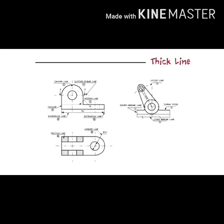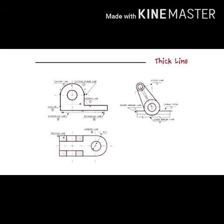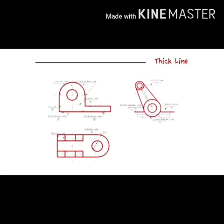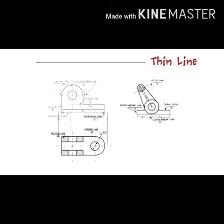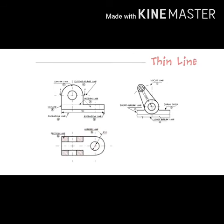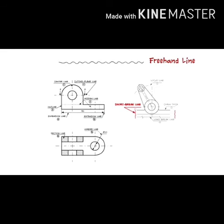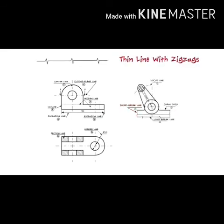First is a continuous thick line, used to display the outline and edges of the main drawing. Next is a continuous thin line, basically used for dimensions, extension, projection, leaders, hatching, etc. Next is a continuous thin freehand line, used to show short breaks or irregular boundaries. Next is a continuous thin line with zigzags, used to show long breaks.